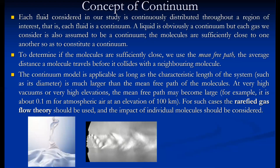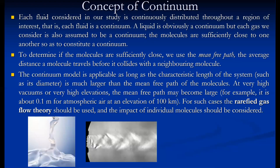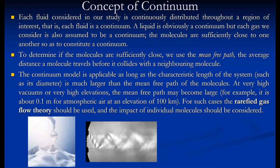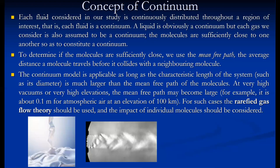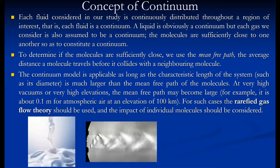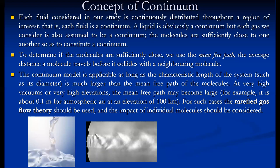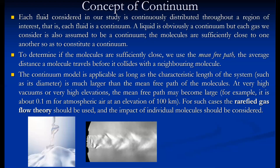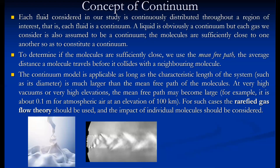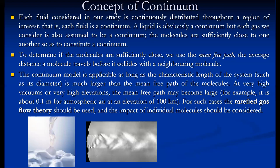This condition generally holds in liquids because the molecules are very close together, so the mean free path is comparatively less than the characteristic length. But at very high vacuum, where there is very little fluid, especially at high elevations, the mean free path may become large. For example, it is about 0.1 meter for atmospheric air at an elevation of 100 kilometers, where the density is very low and molecules are far apart. In such circumstances, the rarefied gas flow theory is applicable, and the impact of individual molecules must be considered — this is the particle approach, and Lagrangian approach is generally used.